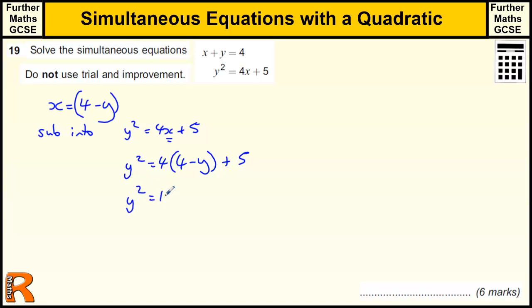We need to multiply out a single bracket, 16 minus 4y plus 5.